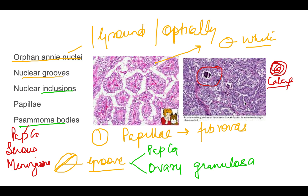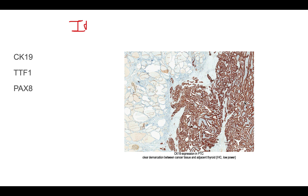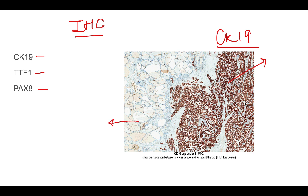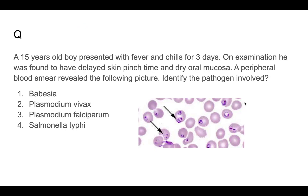So if you see papillae with optically clear nuclei in a histology exam, it is papillary carcinoma. The IHC markers for papillary carcinoma thyroid are CK19, TTF1, and PAX8 — of which CK19 is the most important. In the picture, the tumor is positive for CK19 while the normal thyroid tissue is negative.